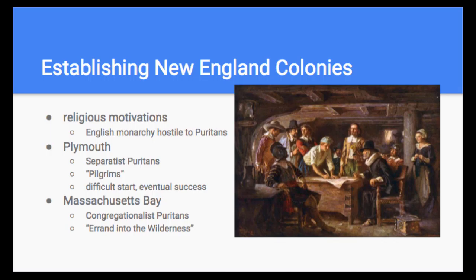Unlike Virginia, the New England colonies had religious motivations for coming to America. The Chesapeake and Virginia were economically and company-based, while the New England colonies were more religiously based. The English monarchy was increasingly hostile during the reign of Charles I to people who refused to follow the hierarchy of the Church of England. If you were Puritan, Catholic, or any other faith besides Anglican, you were often treated very badly and persecuted under the reign of Charles I.